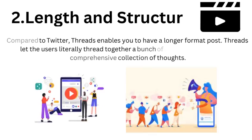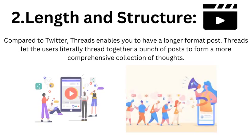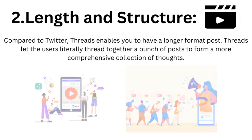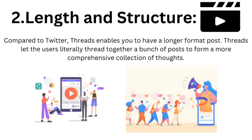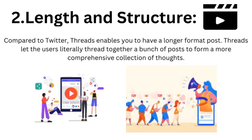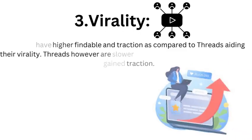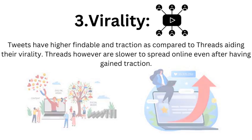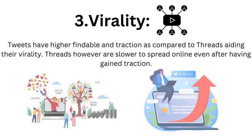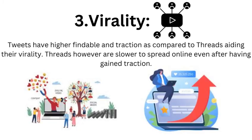In terms of length and structure, compared to Twitter, Threads enables longer format posts. Threads lets users literally thread together a bunch of posts to form a more comprehensive collection of thoughts. Regarding virality, tweets have higher findability and traction compared to threads, aiding their virality. Threads, however, are slower to spread online even after gaining traction.